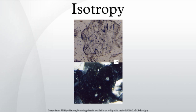A quadratic form Q is said to be isotropic if there is a non-zero vector V such that Q(V) equals zero. Isotropic coordinates exist on an isotropic chart for Lorentzian manifolds. An isotropy group is the group of isomorphisms from any object to itself in a groupoid.